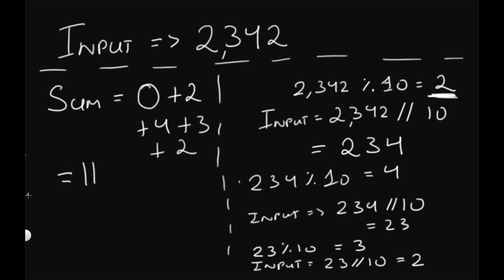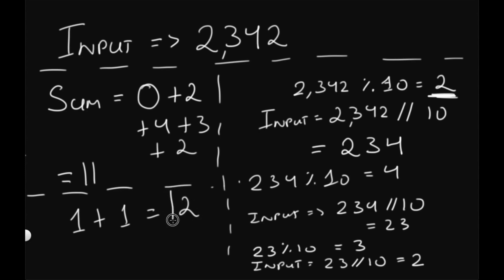Since we didn't get a single digit yet, we need to perform the process one more time on 11. Adding its digits: 1 plus 1 equals 2. Since 2 is a single digit number, we return it as our answer. Now let's look at the code for this approach, and then I'll show you the mathematical way.